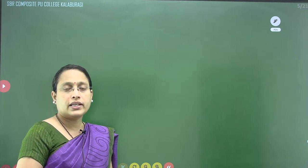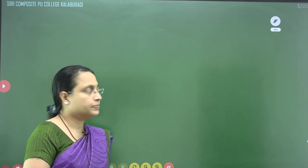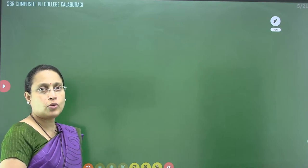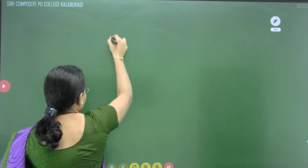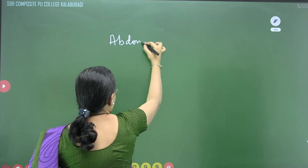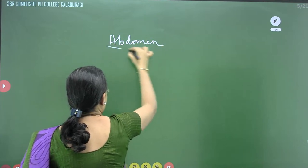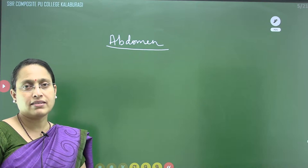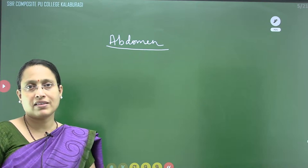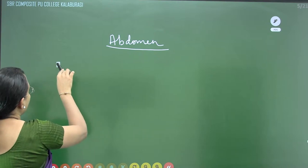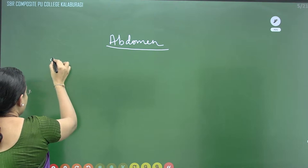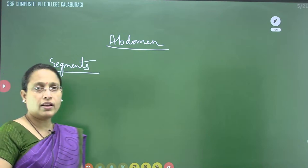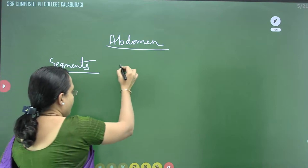Hello students, today I'll be continuing the morphology of cockroach. Last time I taught about the head and the thoracic region. Today I'll be explaining about the abdomen of cockroach. First I'll explain about abdominal segments, and then the various appendages present in the abdomen.